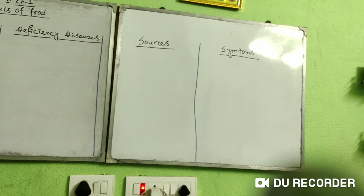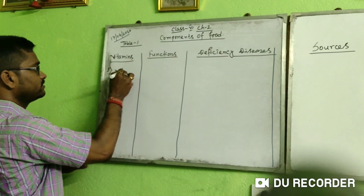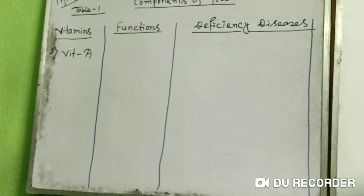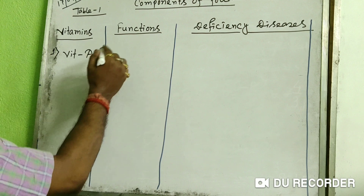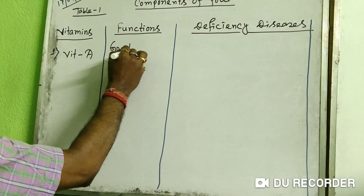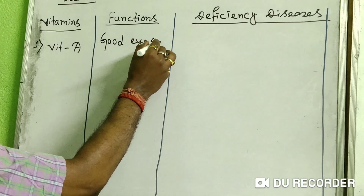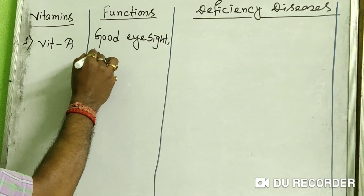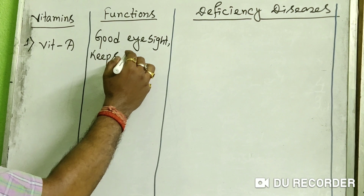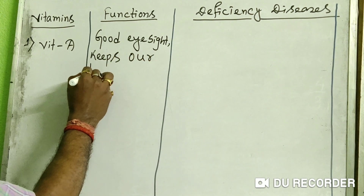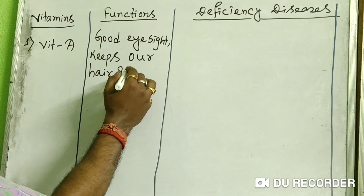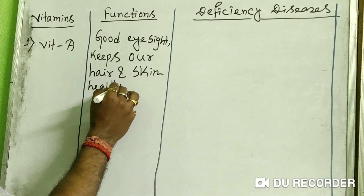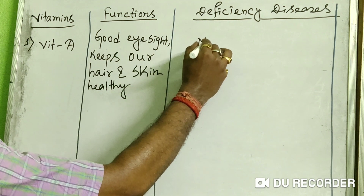Let's start with Vitamin A. The functions of Vitamin A are: good eyesight, and it keeps our hair and skin healthy. The deficiency disease caused by lack of Vitamin A is night blindness.